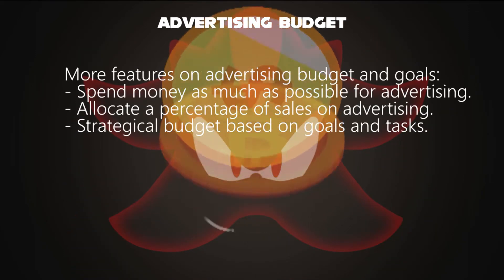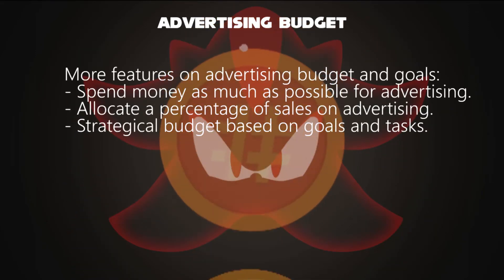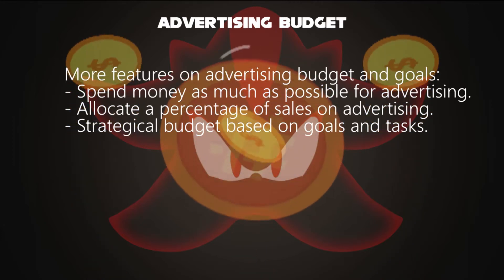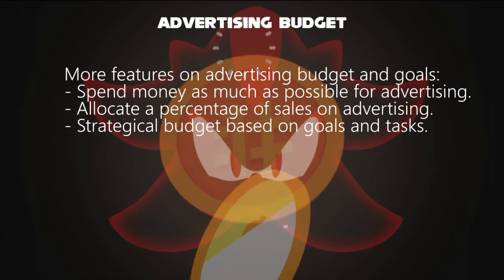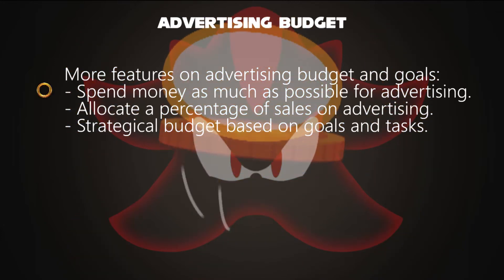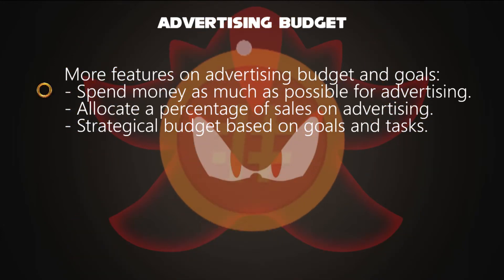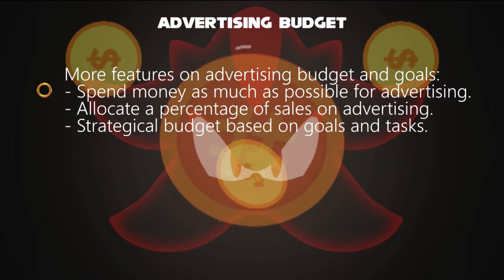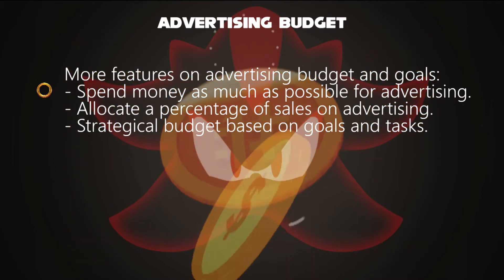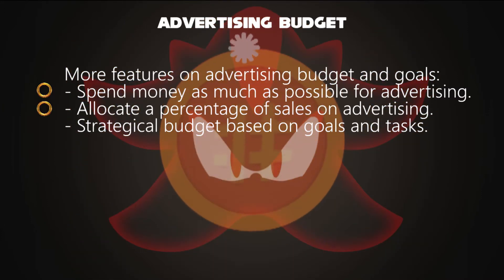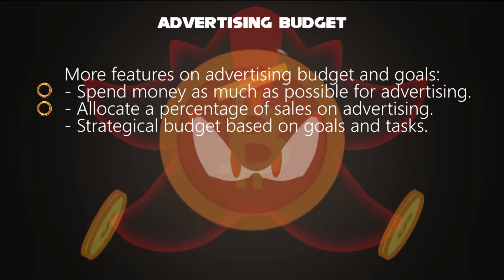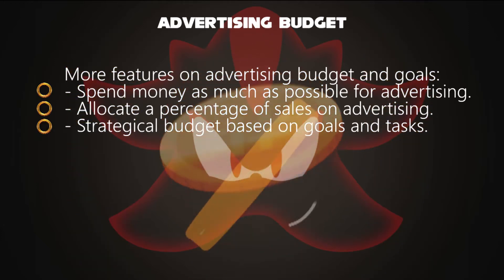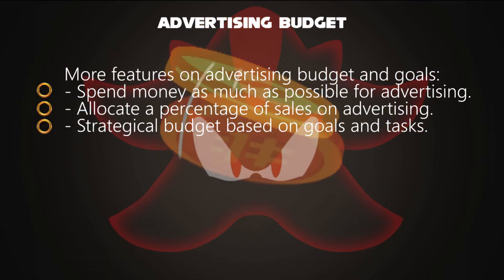Companies can determine a level to set their advertising budget in several different ways. They must spend money as much as possible for advertising. They must allocate a percentage of sales on advertising, and determine the objectives based on goals and tasks.